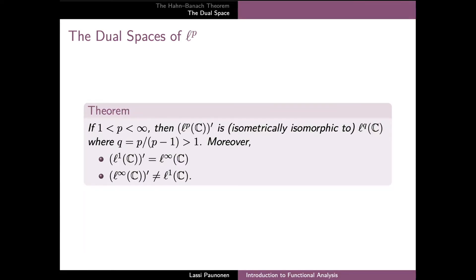A similar result holds for the spaces of p-summable sequences. In this case as well, the dual of ℓ^p is ℓ^q whenever p is finite and strictly larger than one, and the dual of ℓ^1 is ℓ^∞. Moreover, the dual of ℓ^∞ is again a space strictly larger than ℓ^1.